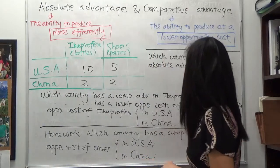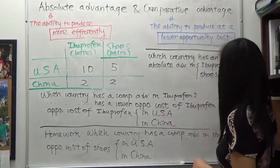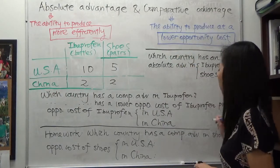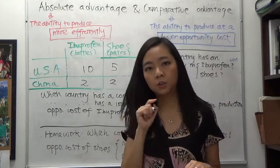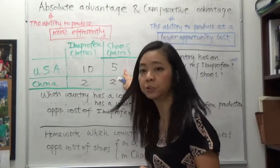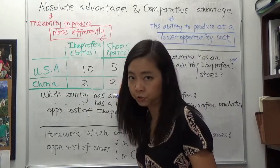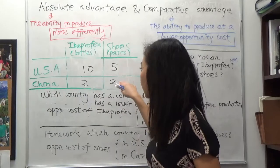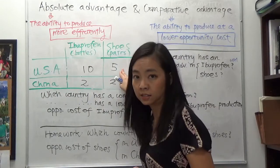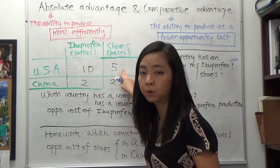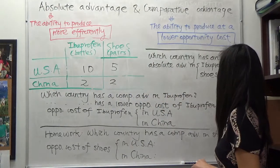What about shoes? In one labor hour, the US can produce five pairs of shoes, whereas China can produce only two pairs of shoes. Since five is greater than two, the US has an absolute advantage in the production of shoes as well. That one is still relatively straightforward.